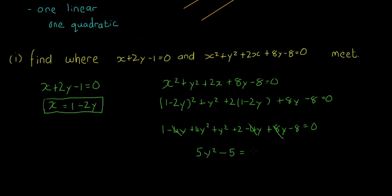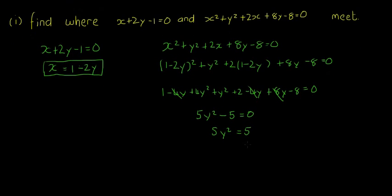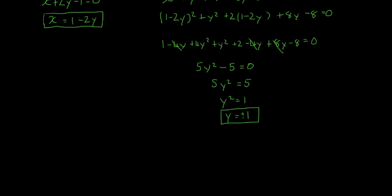So we have 5y² − 5 = 0, which gives 5y² = 5, meaning y² = 1. Therefore y = ±1. Those are our two values for y, and now we need to find the corresponding values of x.